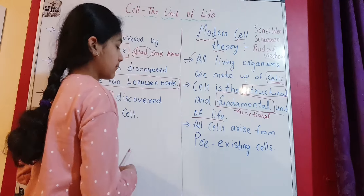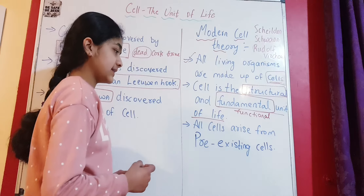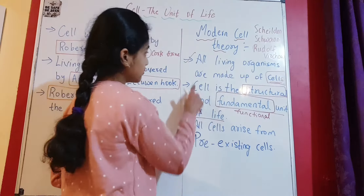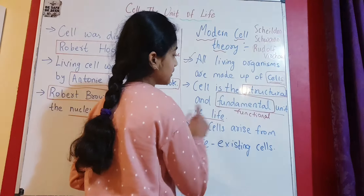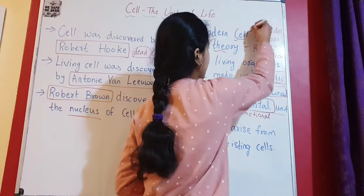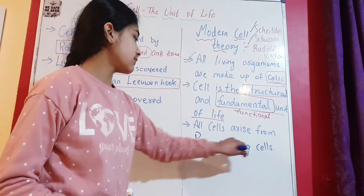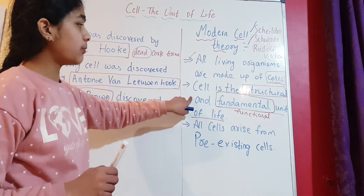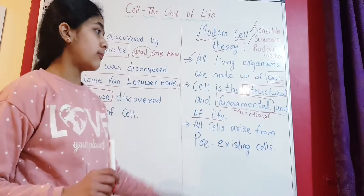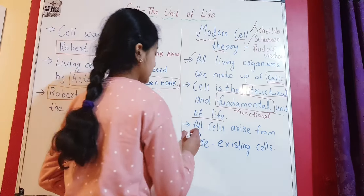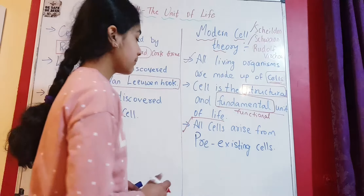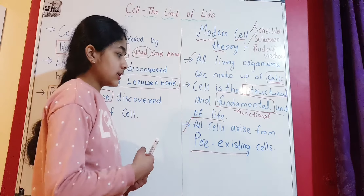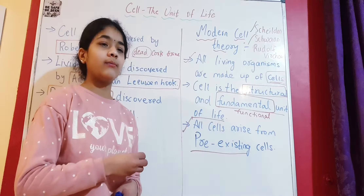The next point is: all cells arise from pre-existing cells. This is a very important one. The first two points — all living organisms are made of cells, and cell is a structural and fundamental unit of life — were given by Schleiden and Schwann. But this third point was added by Rudolf Virchow, who modified the cell theory.